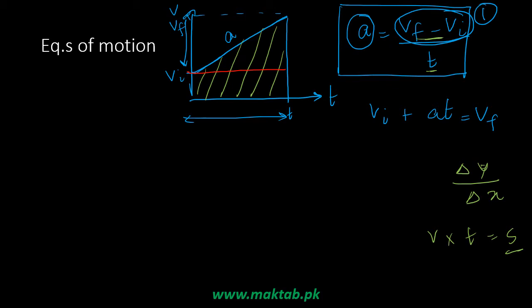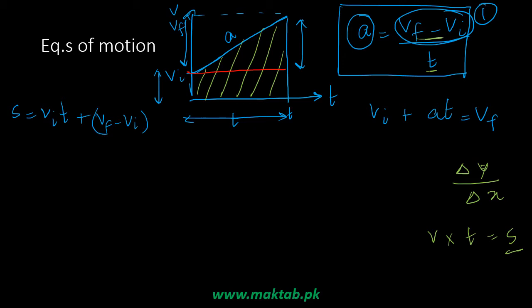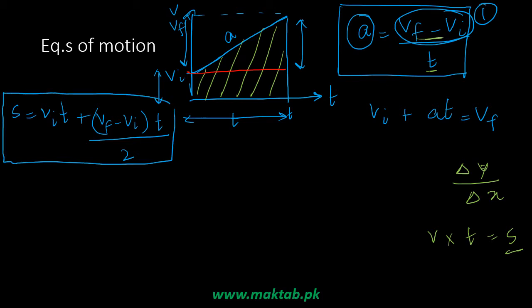The rectangle area is height times width: initial velocity times time T. We add the triangle area — its height is VF minus VI, its width is T — and divide by 2 since the area of a triangle is one-half base times height. This gives us equation number 2. So displacement has two components: one from initial velocity and one from acceleration.